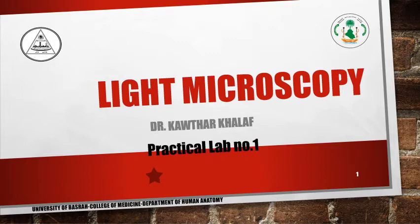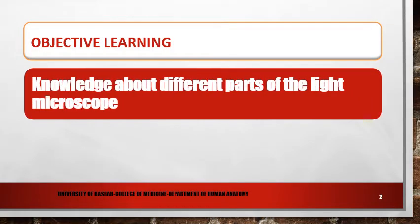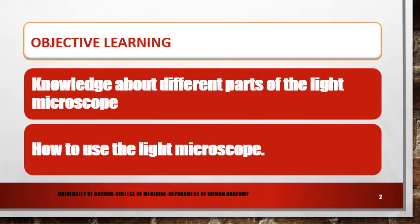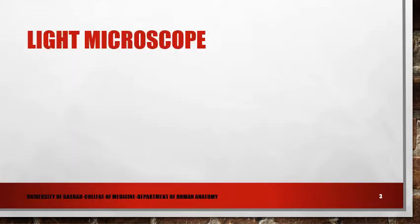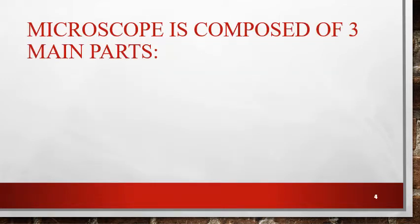The first practical lab is about light microscopy. The objective learning of this lesson is knowledge about different parts of the light microscope and how to use it. Light microscope is an instrument used in the examination of invisible objects which cannot be seen by the naked eye.